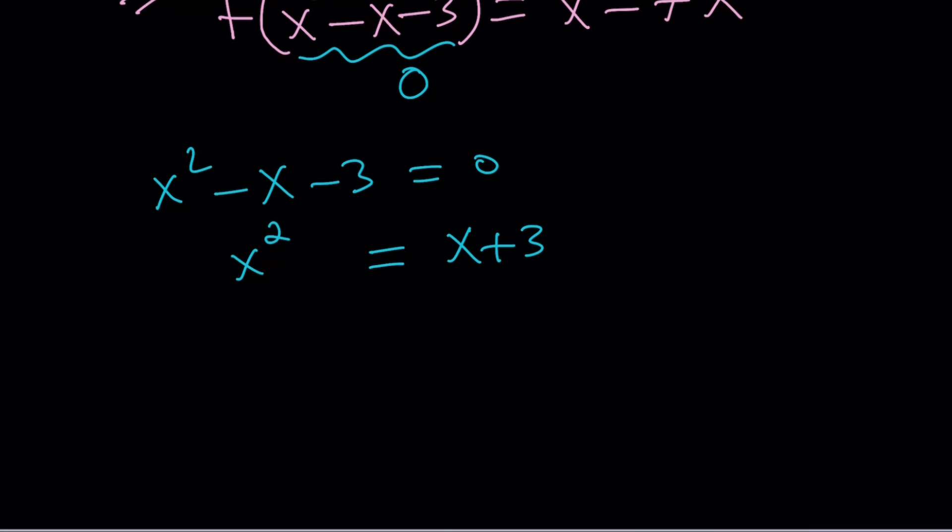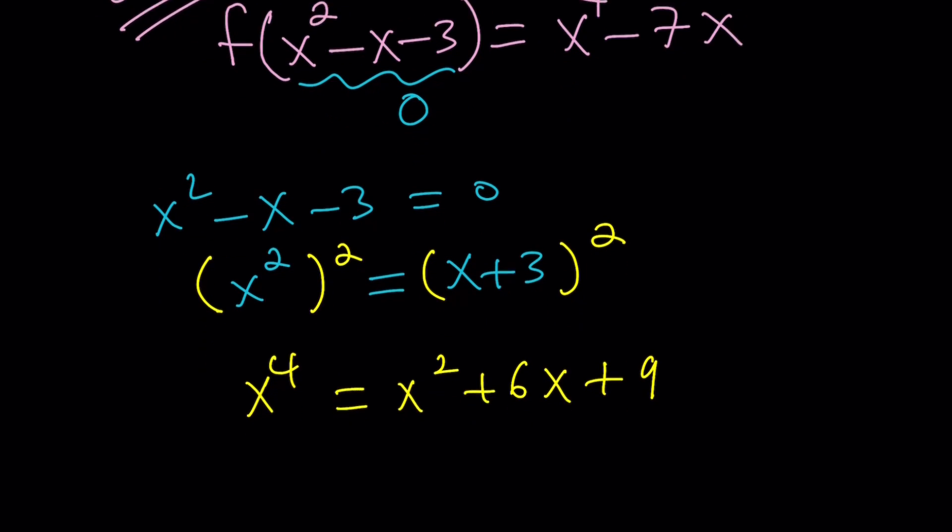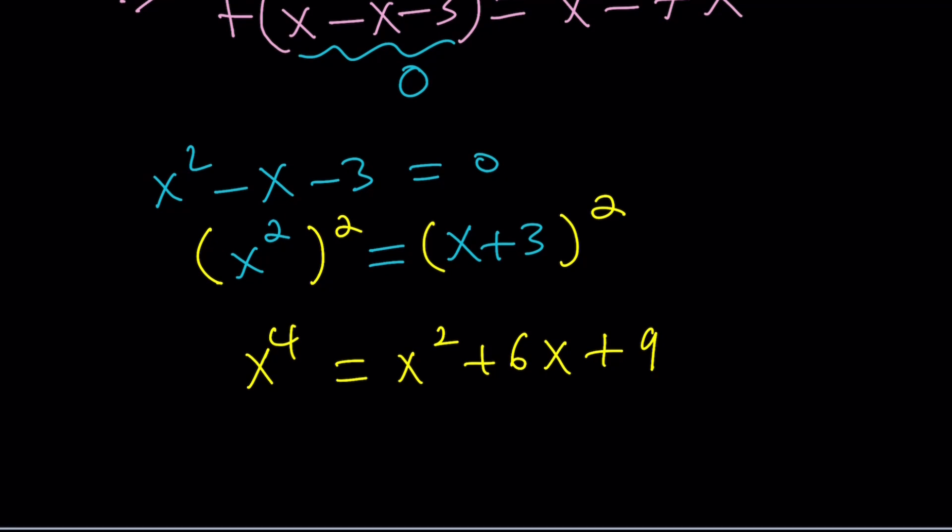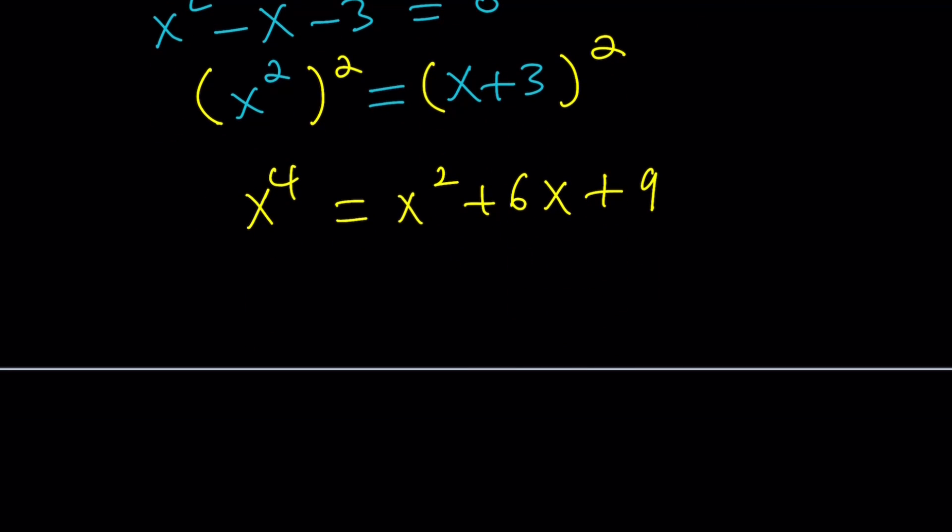And we're going to get x to the fourth power from here by squaring both sides. When you do, you're going to get x to the fourth equals x squared plus 6x plus 9. We did replace x squared with x plus 3 and we got this. But notice that x squared pops up again. So, we have to keep doing it until we kill all the x squares.